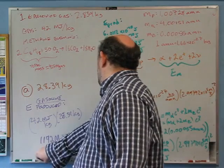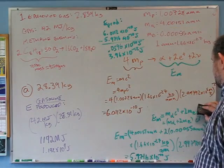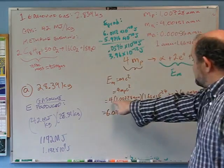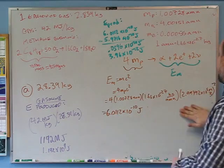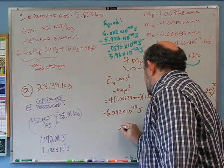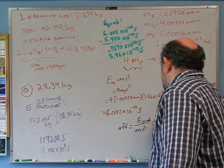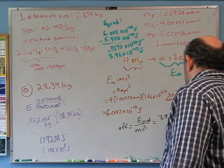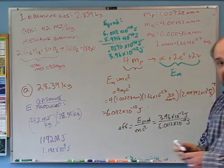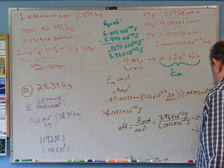That gives us enough to calculate the fundamental efficiency. The mc² of the reactants (four protons) is 6.0112×10⁻¹⁰ J. So the fundamental efficiency is E_produced ÷ mc² = 3.96×10⁻¹² ÷ 6.0112×10⁻¹⁰ = 0.0066 — about 0.66%. So that's the efficiency of nuclear fusion — about 0.7%, right in the range of 0.1% to 1% that we'd expect.